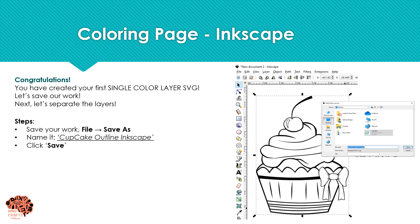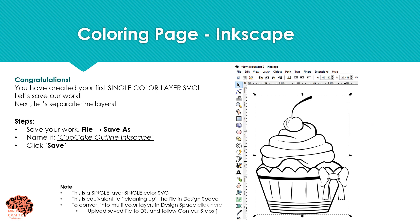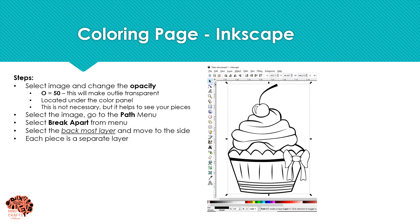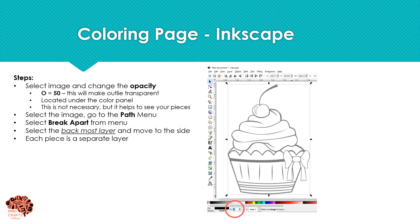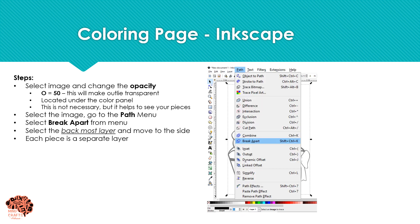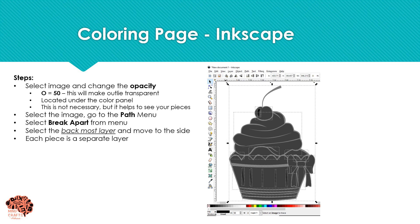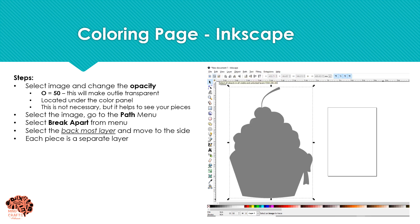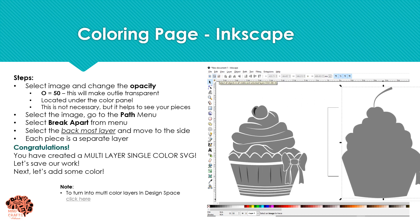Next, let's go ahead and separate these layers. Remember, this is single color, single layer — so this is the equivalent of cleaning up an image in Design Space. The first thing I do is change the opacity; I drop it down to 50 to make it a little bit transparent. Then I'm going to go to Path and select Break Apart. Here you can see all the pieces have now been broken apart. We have now created a multi-layer, still single colored SVG file.